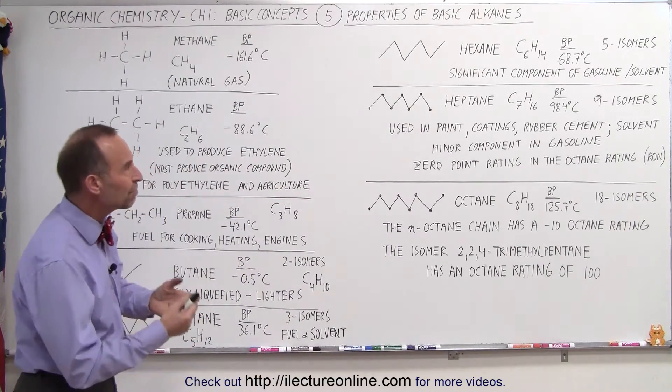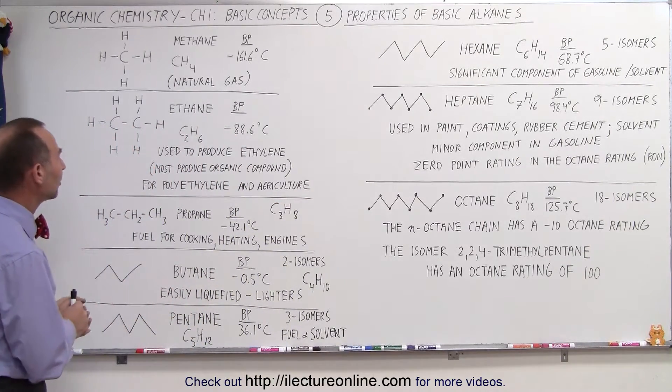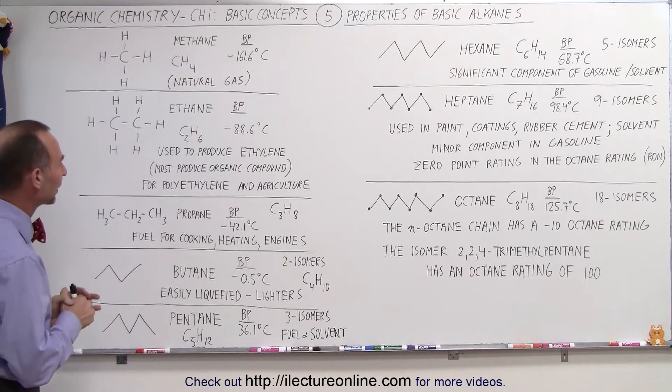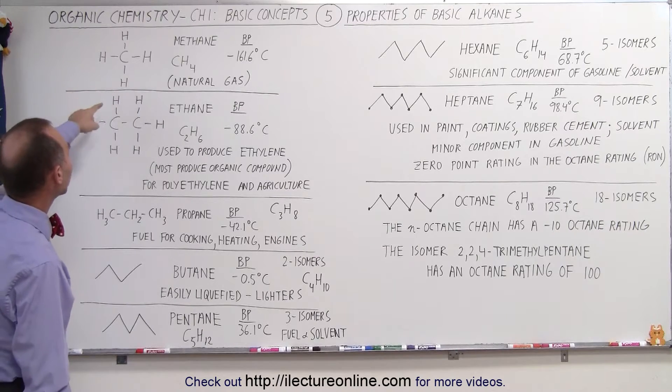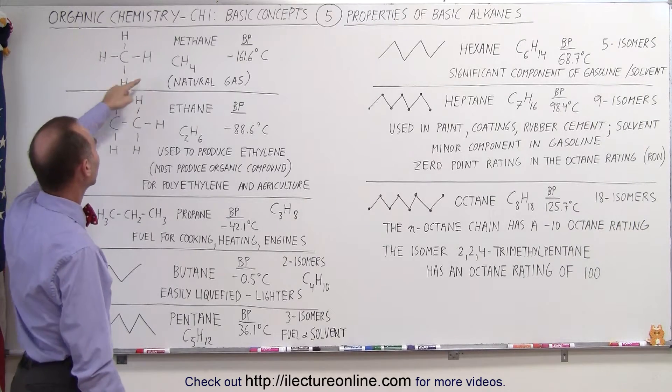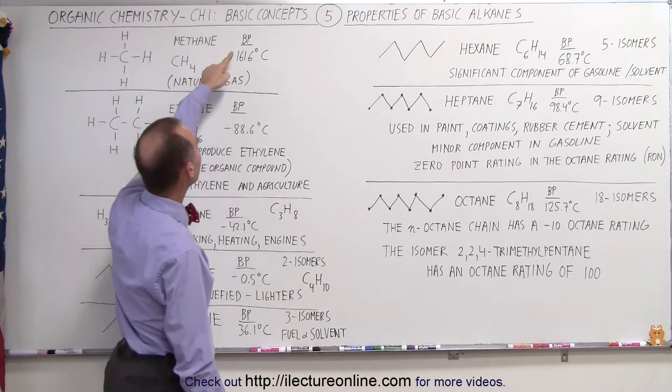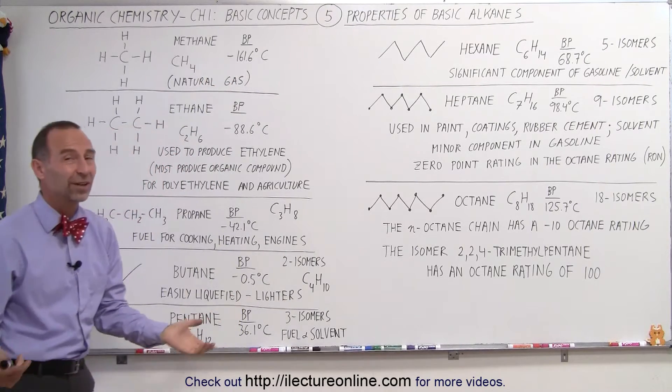We'll do the first eight molecules in the alkane series. Of course there's many more after that, but it gets more complicated as we go on. Starting with methane, it's the simplest alkane, has a single carbon, four hydrogens. Notice it has a boiling point of minus 161.6 degrees centigrade.